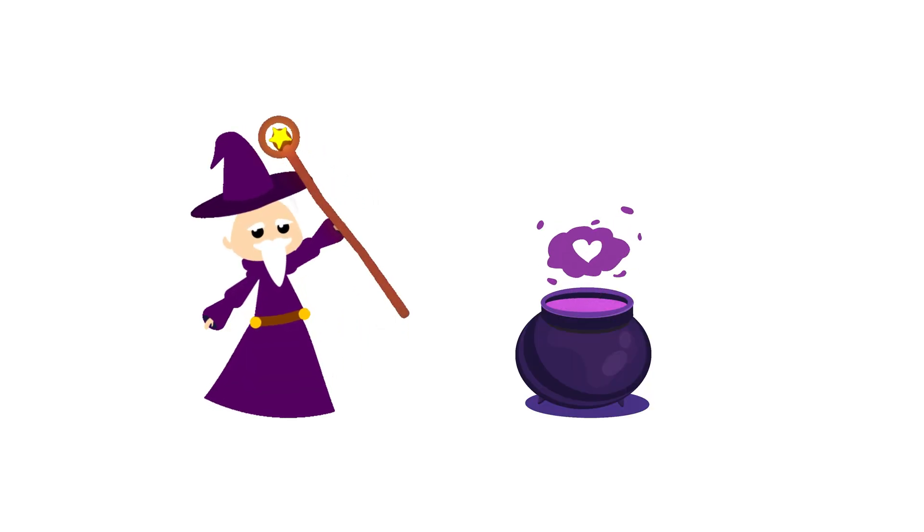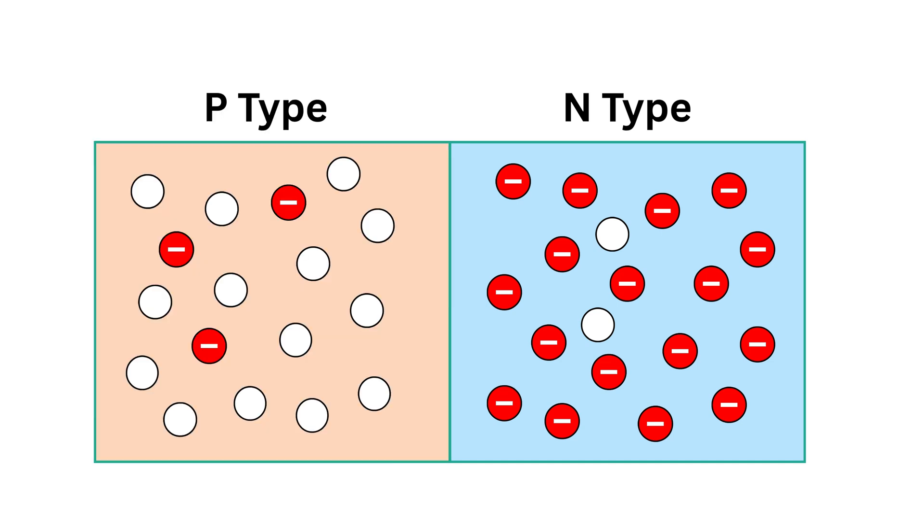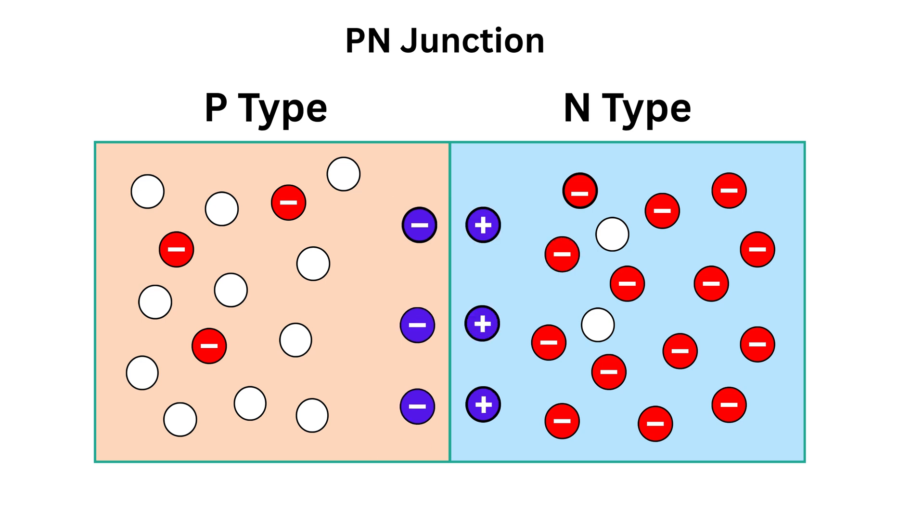Super duper easy till now, right? Now here comes the magic. Let's place a piece of N-type silicon next to a piece of P-type silicon. The point where they meet is called a PN junction. At first, something very interesting happens. The free electrons on the N side notice empty spots, or holes, on the P side and start moving over to fill them. When an electron leaves the N side, it leaves behind a positive charge because it was part of a neutral atom before. And when it enters the P side and fills a hole, it adds a negative charge there.